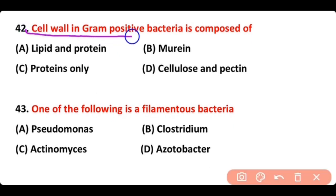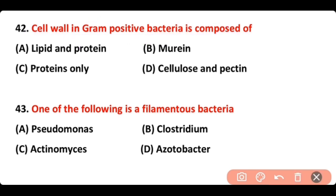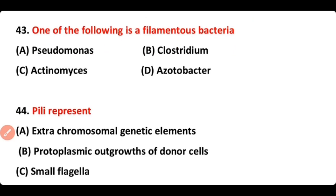Question number 42: The cell wall in gram-positive bacteria is composed of — lipid and protein, murein, protein only, or cellulose and pectin? The correct answer is option B. The cell wall of gram-positive bacteria consists of murein, which is composed of amino acids and sugars.